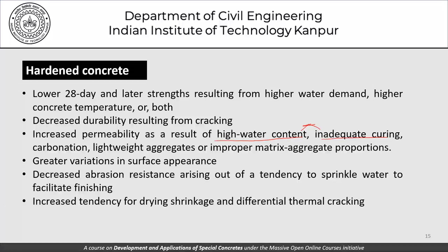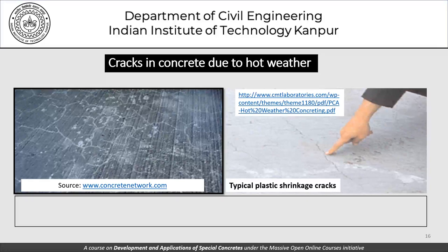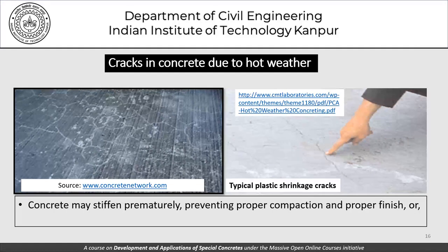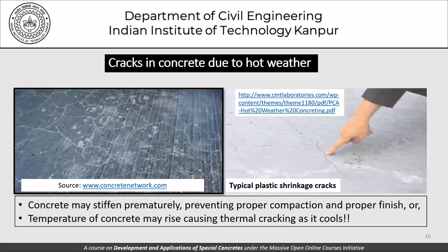Further effects on hardened concrete include greater variations in surface appearance, decreased abrasion resistance from a tendency to sprinkle water to facilitate finishing, and increased tendency for drying shrinkage and differential thermal cracking. Concrete may also stiffen prematurely, preventing proper compaction and finishing, or its temperature may rise, causing thermal cracking as it subsequently cools.